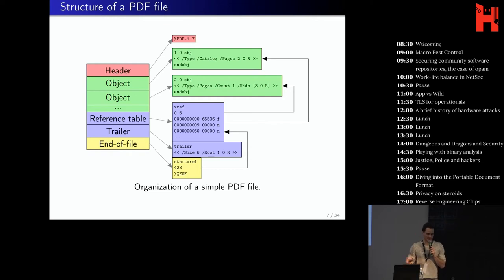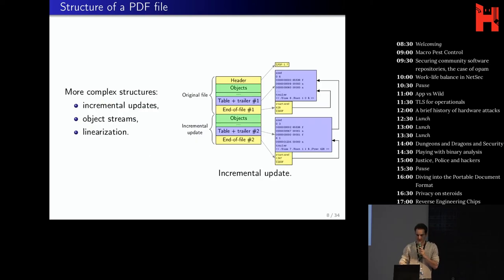Of course, this is just a very simple version of a PDF. In fact, there are many more syntactic constructions. For example, you can do an incremental update. So you have an original PDF file and you want to modify some content. You can just append the modification. So you append new objects. Then a new table to refer to these objects, or to delete previous objects. And then the new end of file will refer to this table. There are also object streams. That is, you can compress objects into other objects, which is kind of more complicated. And linearization, I will not talk about it, but it is very complex in the structure.